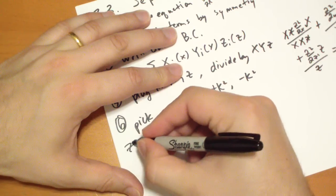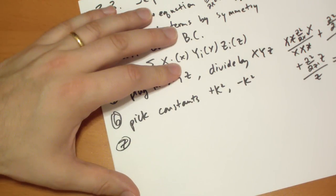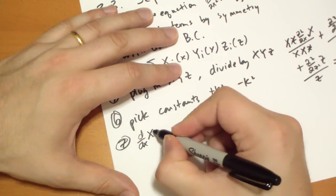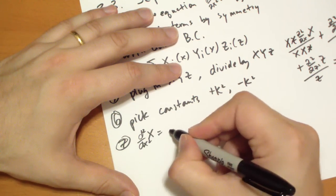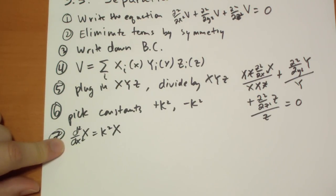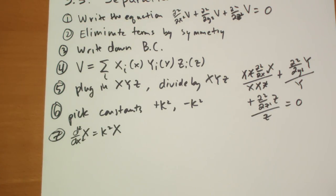Now you have simple differential equations. d²X/dx² equals, let's say you chose a positive term, k²X. And you're going to get the same thing for Y and Z. These are fairly simple to solve in Cartesian coordinates. In spherical coordinates, not so much, but it's definitely not difficult.